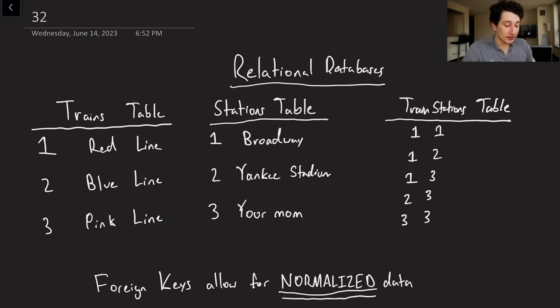So as you can see in the trains table I've got red line, blue line, pink line, and the stations I've got Broadway, Yankee Stadium, and your mom because I can't resist the low-hanging fruit of making a your mom is getting trained joke.